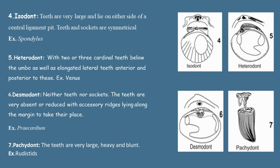Heterodont: with two or three cardinal teeth below the umbo as well as elongated lateral teeth anterior and posterior. An example is Venus. The next type is Desmodont: neither teeth nor sockets — the teeth are very reduced or absent, with accessory ridges lying along the margin to take their place. Pericardium is an example of desmodont.